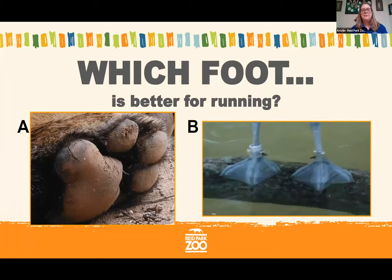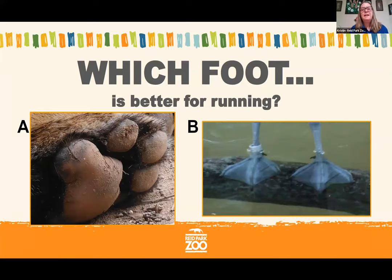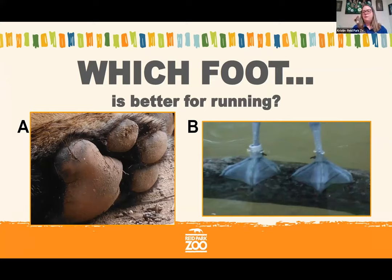Now I have a question for you: which foot do you think is better for running? The tiger paw on the left, which is letter A, or the duck foot on the right, which is letter B? I'm seeing a lot of A's — very good! The tiger paw has padding, just like the lion or grizzly bear we talked about. The duck foot doesn't have padding; it's webbed, so it's great for swimming. If you've seen ducks walking on land, they're usually not very graceful or quick — they're much faster in the water.